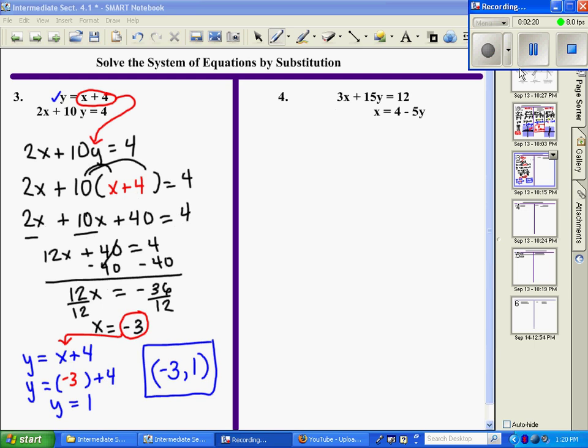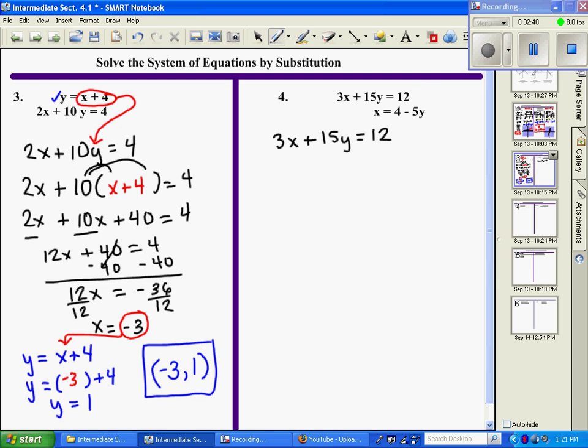Okay, problem number 4, we're doing substitution as well. You look at the two equations, and you find that this variable is already solved for x, so we're going to work with that one. Write this first equation down: 3x plus 15y equals 12. And now since we know x equals this value, I'm going to take that and substitute it in place of x. So I'm going to rewrite this equation, and where x is at, I'm going to put a parenthesis and leave the rest of the equation exactly the same, and now I'm going to make my substitution.